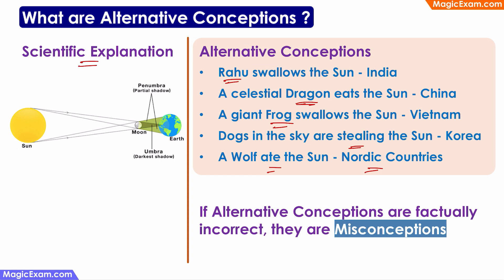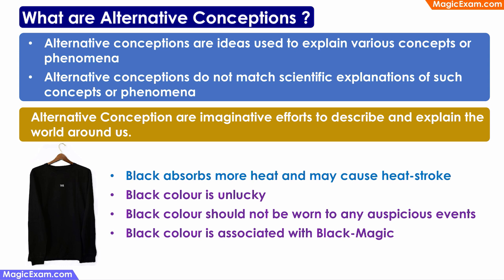So there is a scientific explanation for this phenomenon and there are several alternative conceptions for the same phenomenon. If these alternative conceptions are factually incorrect, then they are called misconceptions. The definition of alternative conceptions is that they are ideas used to explain various concepts and phenomena that do not match the scientific explanation. Alternative conceptions are imaginative efforts used to describe and explain the world around us, especially when no scientific explanation is available.